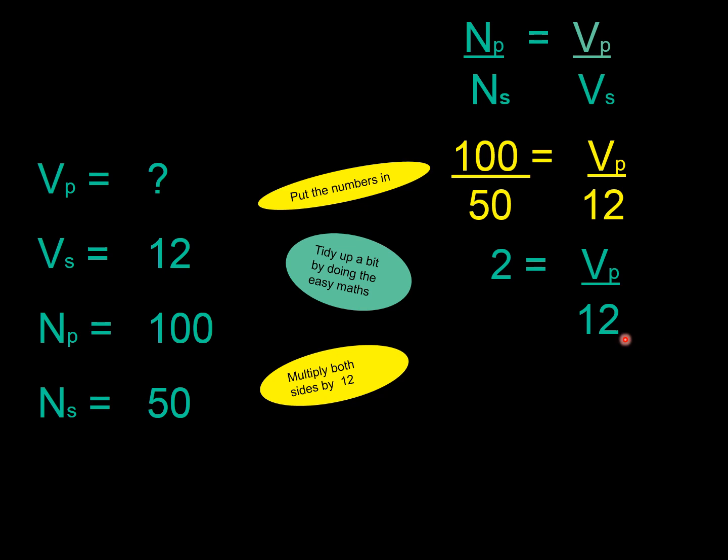Now, I'm going to get rid of this 12. I'm going to multiply this side here, and this side here, both sides by 12. And when I do that, that 12 is going to appear to disappear. And it's going to reappear on the other side. So, we've got 2 times 12 is VP. Calculate it. Put it into your calculator at this point now, and we get 24.